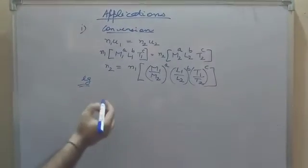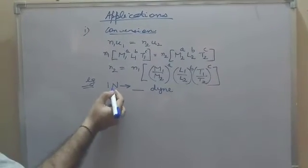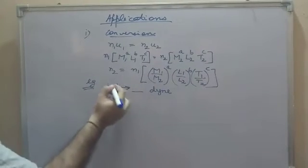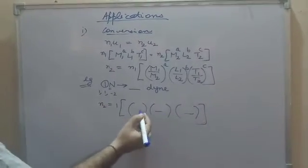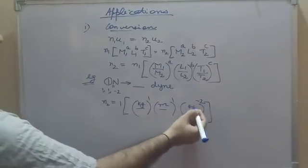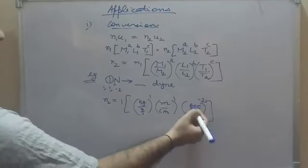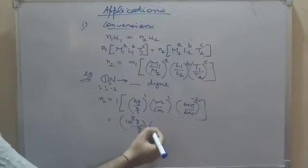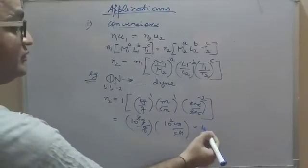For example, convert 1 newton into dynes. The dimensions of newton are [M¹L¹T⁻²]. Newton is in kg·m·s and dyne is in g·cm·s. The seconds cancel. Since 1 kg = 10³ g and 1 m = 10² cm, substituting gives 10³ × 10² = 10⁵. So 1 newton = 10⁵ dynes.